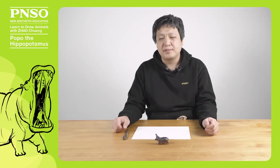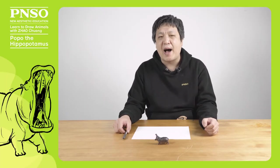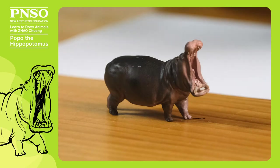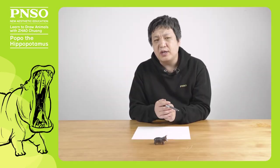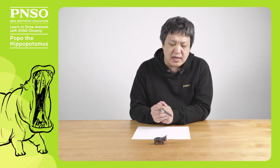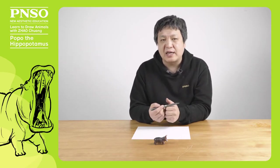Hello, everyone. I'm Zhao Chuang. Today, we are going to draw a hippopotamus. The hippopotamus is a very large, omnivorous animal. It has a huge, horrible mouth, which can open at a big range. Its big mouth and the inside tusks are its powerful weapons. We used to think the hippopotamus is a grumpy, herbivorous animal, but now we know it is actually an omnivore. They eat meat sometimes.